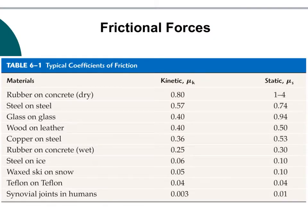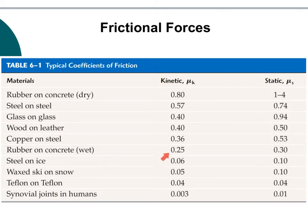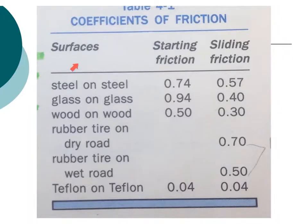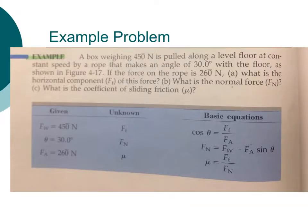Here you can see the types of coefficients of friction for various materials you may encounter in a typical lab setup or physics problem. You can see the static force of friction and the kinetic force of friction, as well as coefficients for starting friction and sliding friction for various surfaces. Those numbers may be important when solving a coefficient of friction problem.